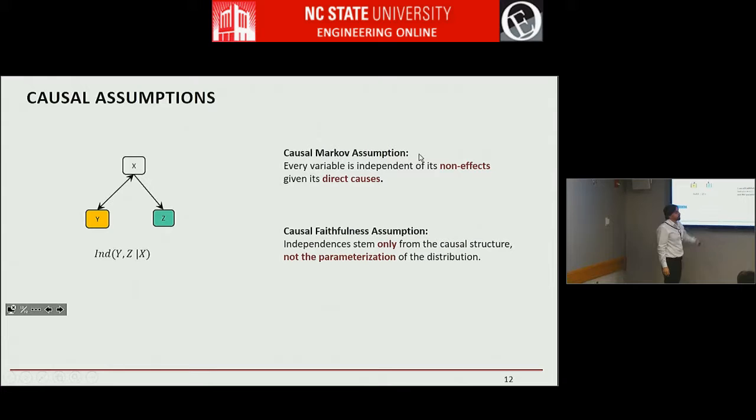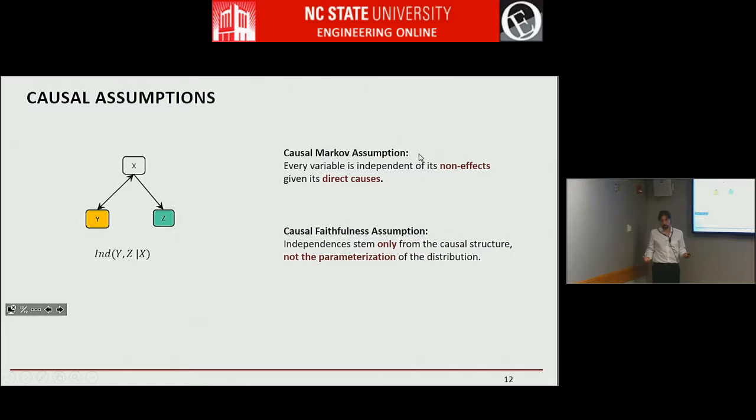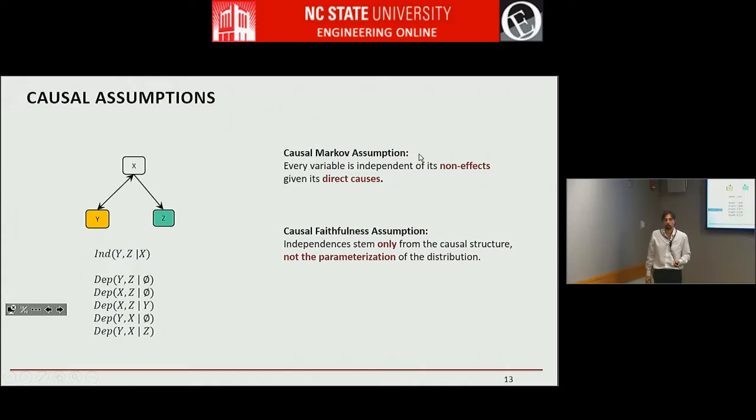Another assumption we often make is the causal faithfulness assumption: all the independencies you observe in your data stem from the causality — they don't accidentally appear there. With this assumption, we expect everything else to be conditionally dependent. These are the two main assumptions that we use.